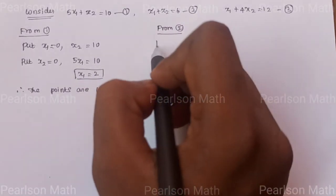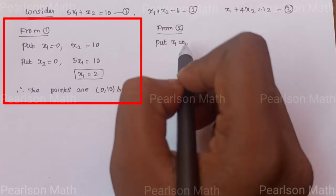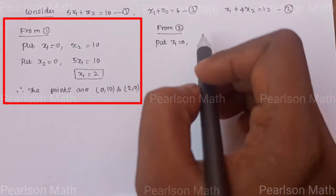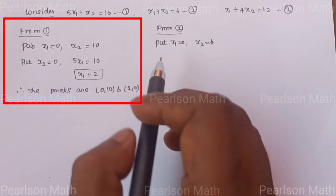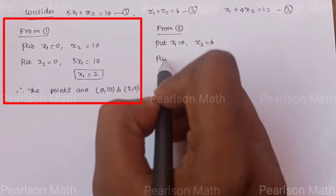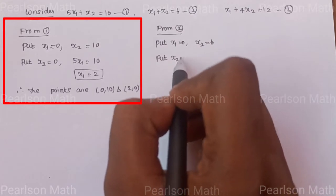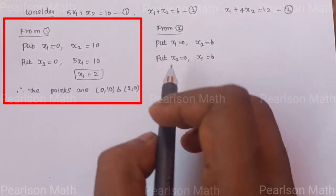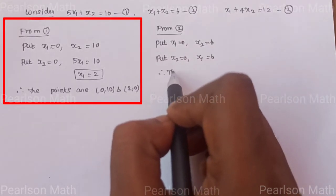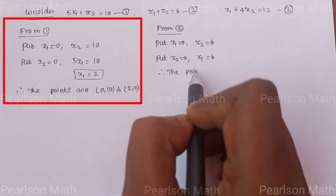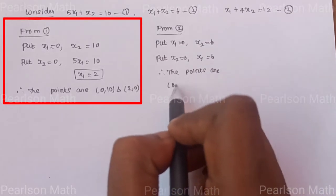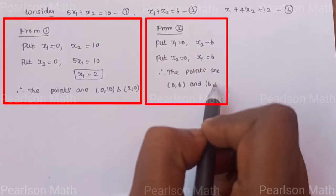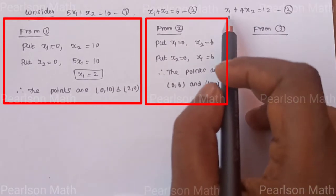For the second equation, same procedure. Put x1 equal to 0, then x2 value is 6. Put x2 equal to 0, then x1 value is 6. Therefore, the points are (0, 6) and (6, 0).